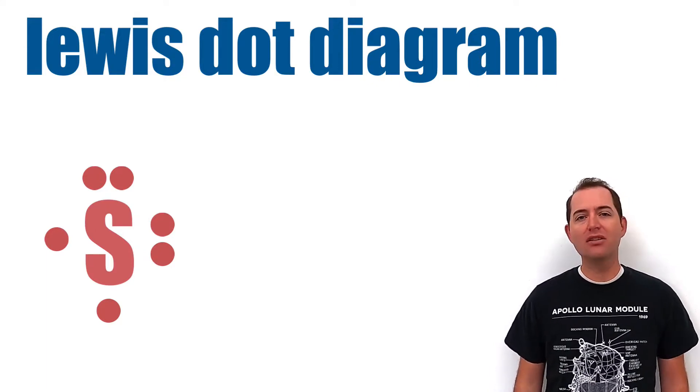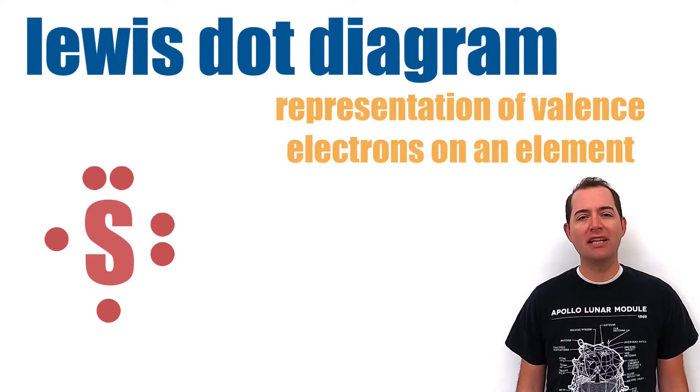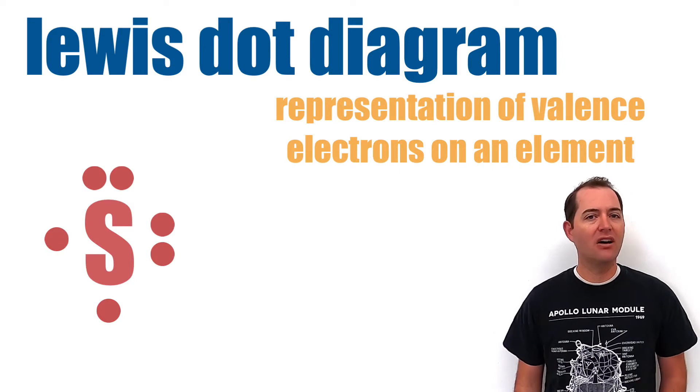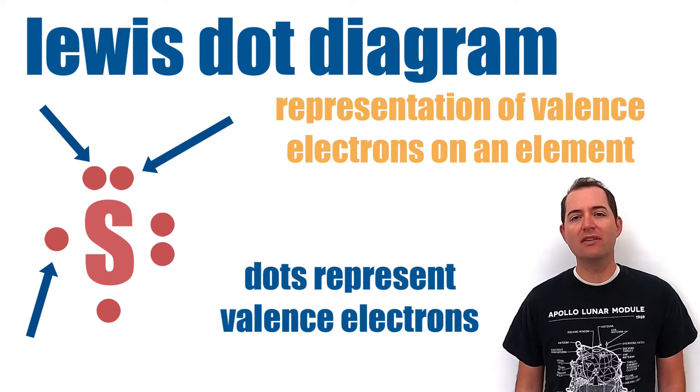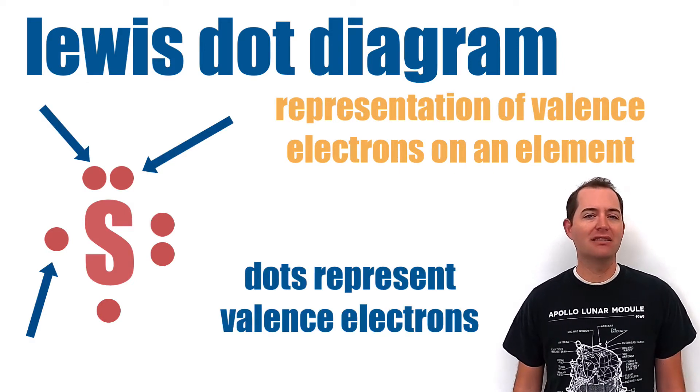A Lewis dot diagram or Lewis dot structure is a representation of the valence electrons on an element. Dots are added around the symbol of the element to represent valence electrons.